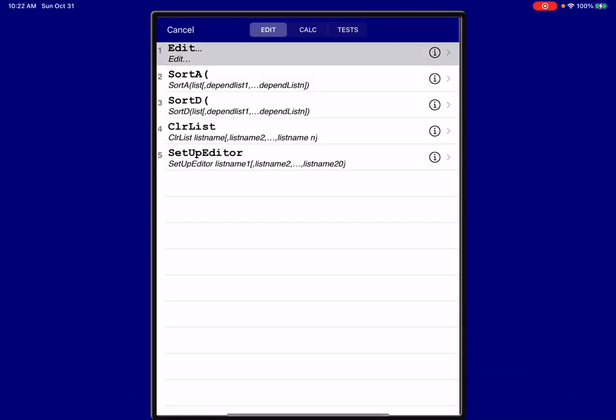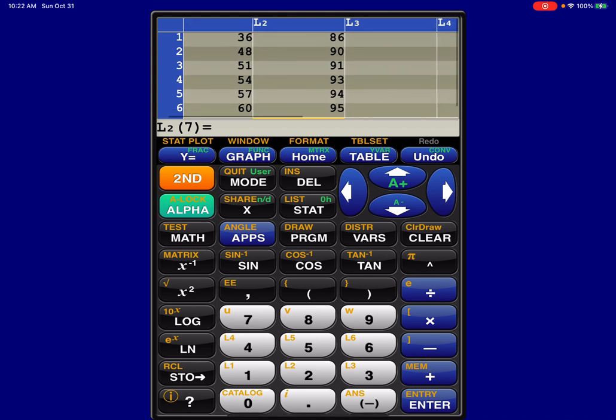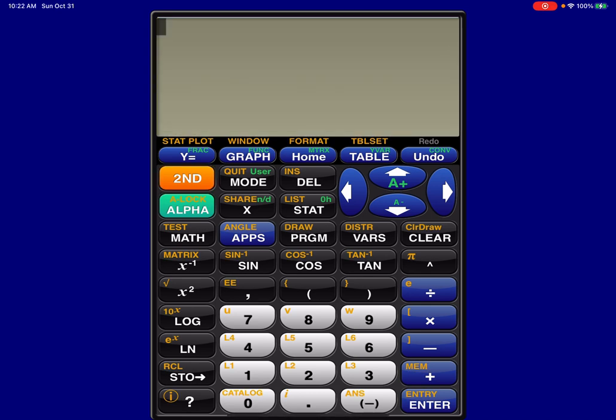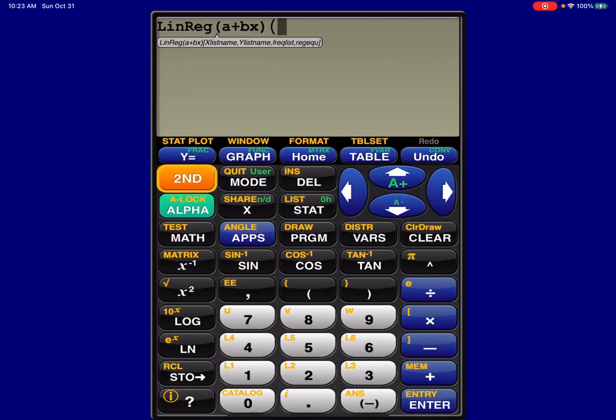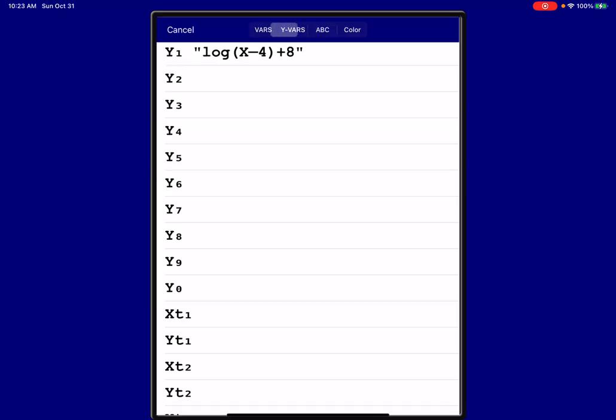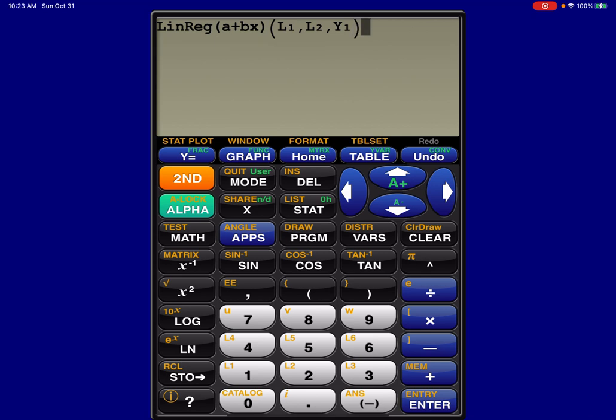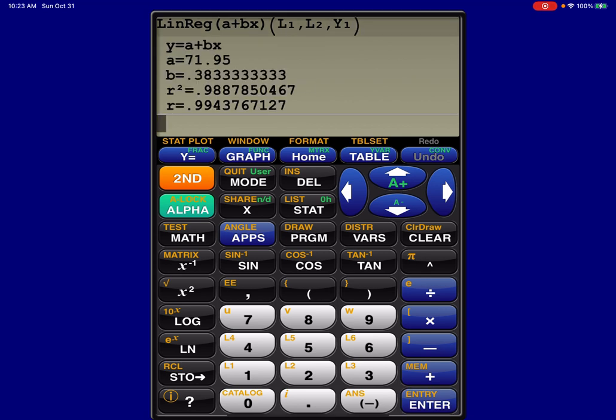Alright, here we go. So I put my data into my lists. You can see it there. And I'm using the app instead of the physical calculator. I always prefer the physical calculator, but when I'm doing these screencasts, I need to use the app. So I'll go L1, L2, and then we'll go into Y1. I'm just going to overwrite Y1 right now. And then there we go, 71.95 and 0.383. So let's start to piece this together.